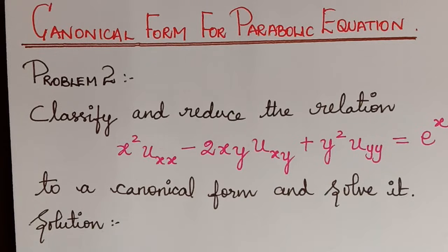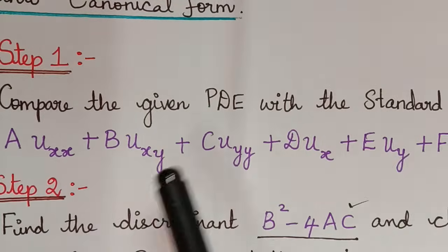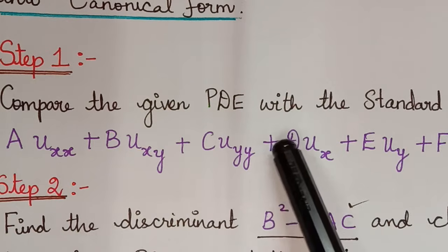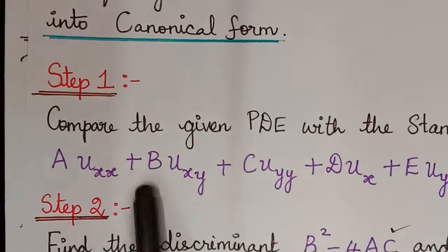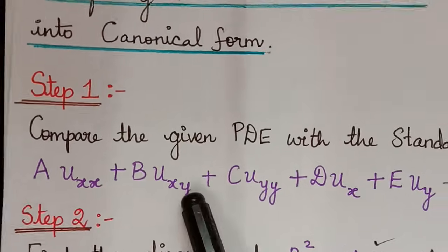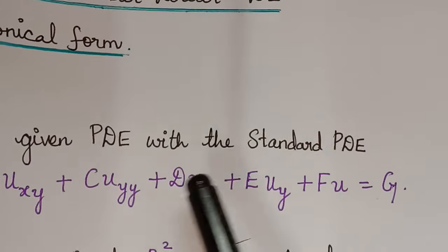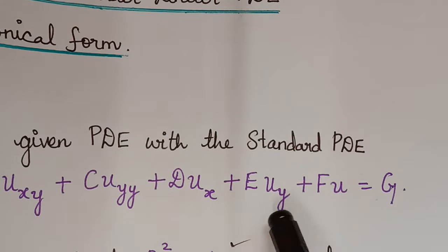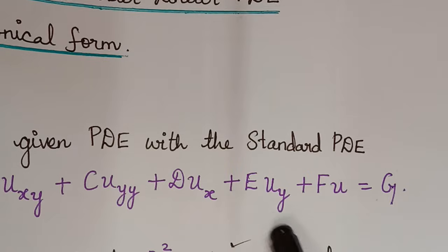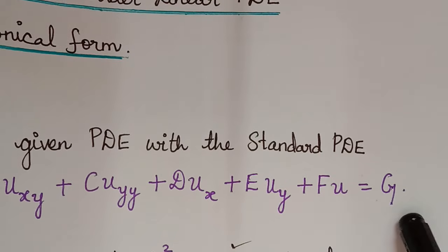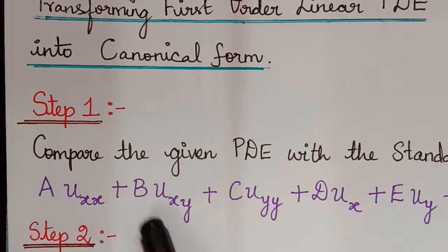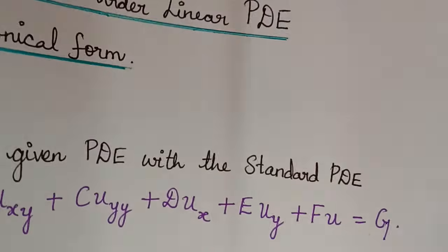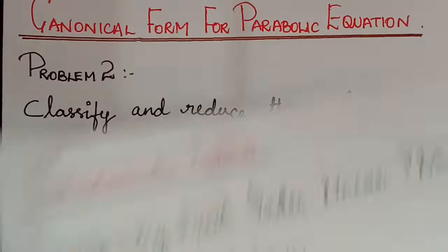The first step to solve such a problem is to compare the given partial differential equation with the standard PDE: a u_xx plus b u_xy plus c u_yy plus d u_x plus e u_y plus f u equals g. We compare with this and obtain the values of a, b, c, d, e, f, and g.